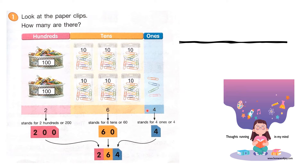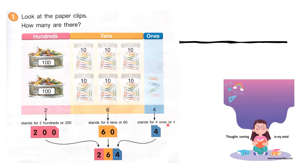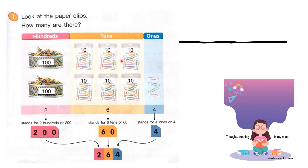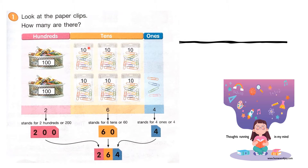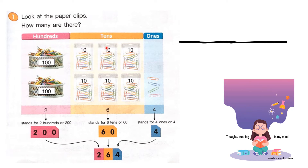There are 4 paper clips. 4 in 1s is exactly 4. In 10s, let's count: 10, 20, 30, 40, 50, 60. There are 60 paper clips. But in 10s, we will count 1, 2, 3, 4, 5, 6 — that is 6 tens. 6 tens stands for 60.